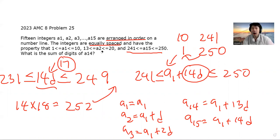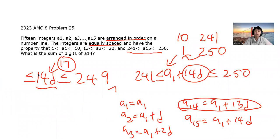So we're halfway done with this problem. We found what D is. Now all we've got to do is find what A1 is, and then we can plug it into this equation and solve for A14. So we have D equals 17. Now we've used all the bounds so far except for 13 ≤ A2 ≤ 20. So let's use that to solve for A1.